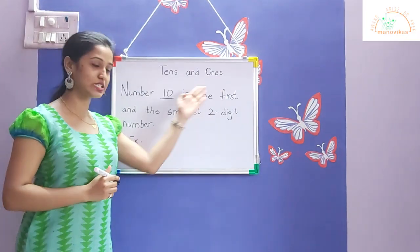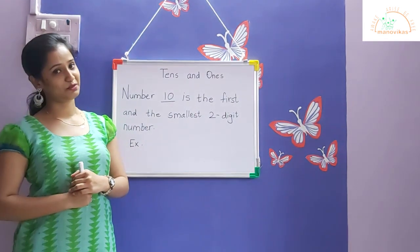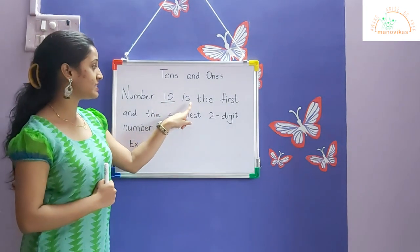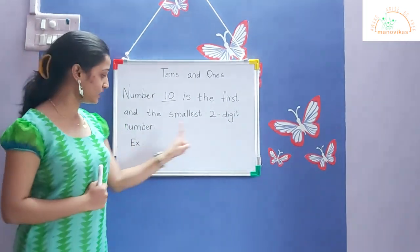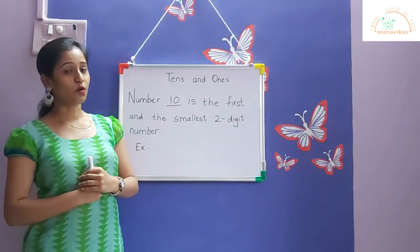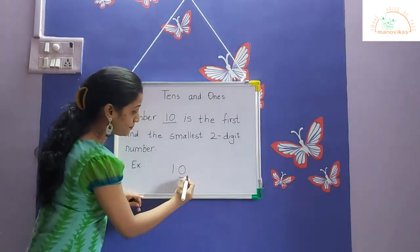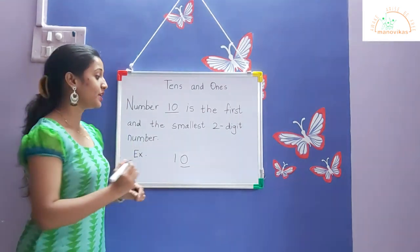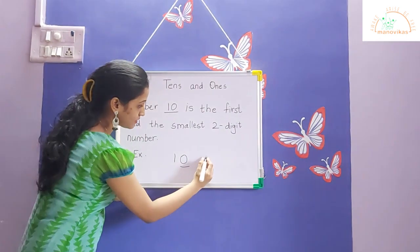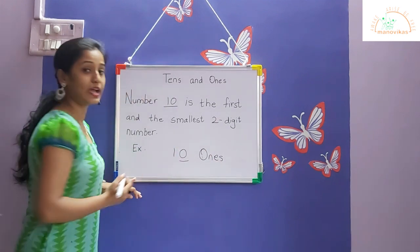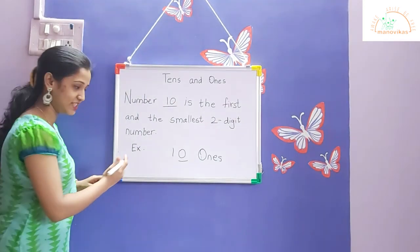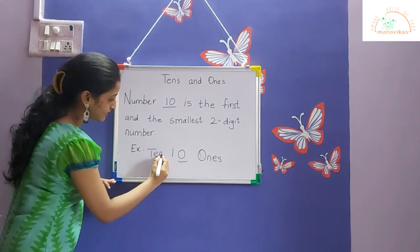Hi students, this is Teacher Tanisha. Today's topic is place value — ones and tens. Number ten is the first and smallest two-digit number. The number on the right hand side is called ones, and the number on the left hand side is called tens.